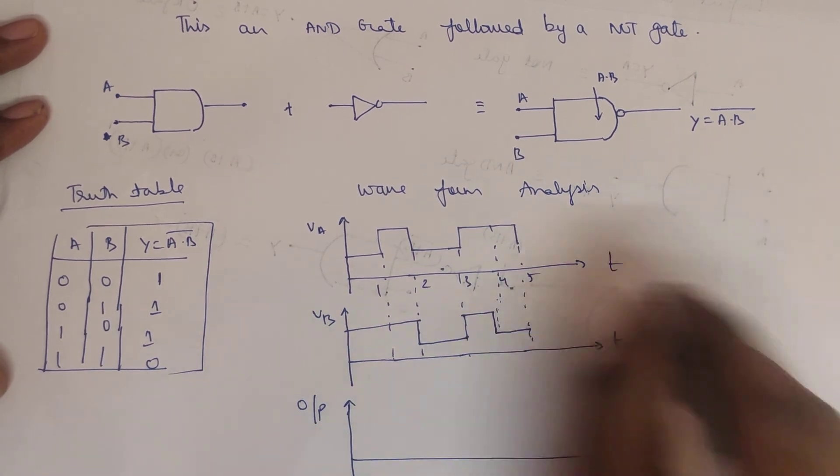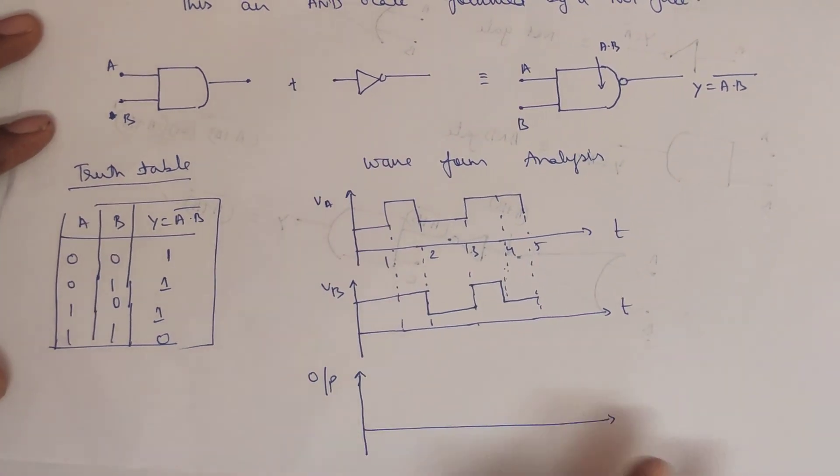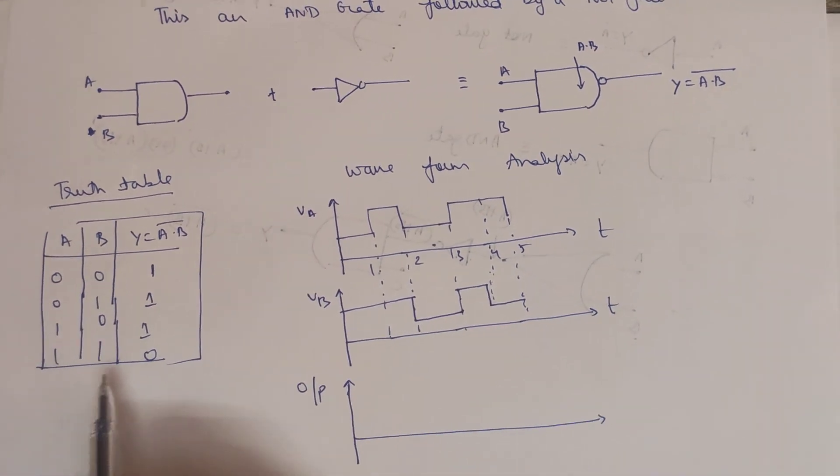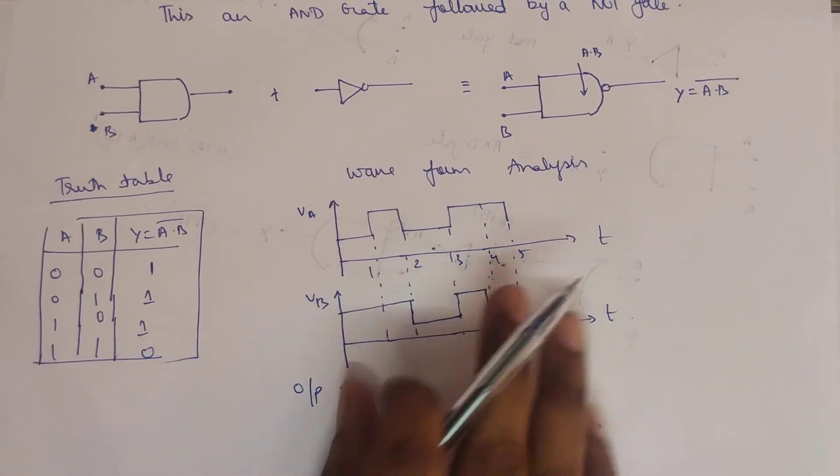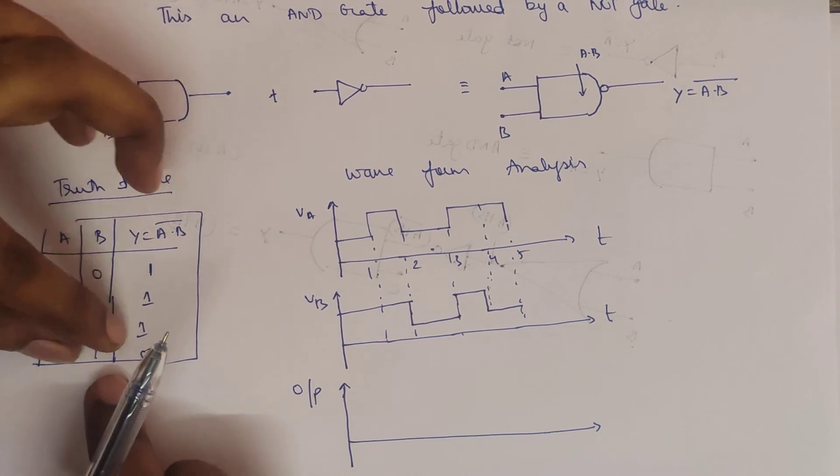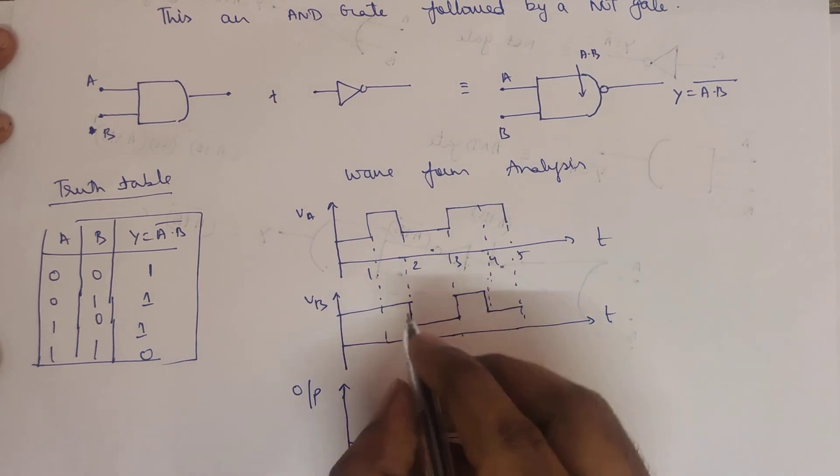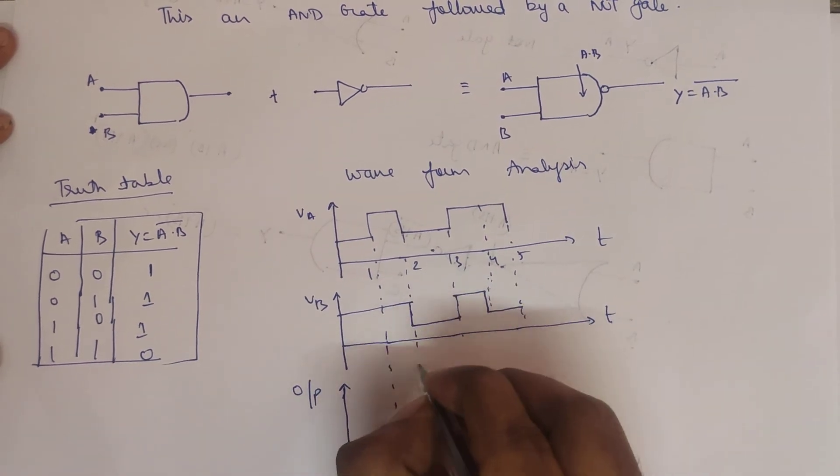Okay, so now we have to draw the output. So output - one, two, three, four, five - and the function of time is mentioned. So output - check the truth table. If both inputs are zero, the output is maximum. So if both are zero, the output waveform will be at maximum.